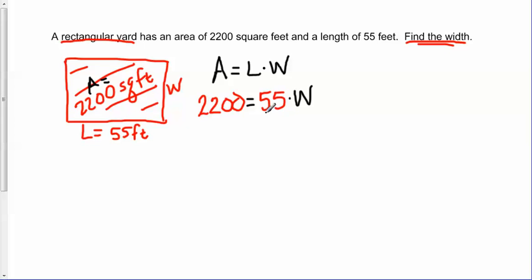So now we're ready to solve. Well, this is going to be a pretty straightforward equation to solve. We want to get w by itself. So we're going to divide both sides by 55. And when we divide 2,200 by 55, we end up with 40. And on the right side, the 55s cancel out, and we will just have a w.